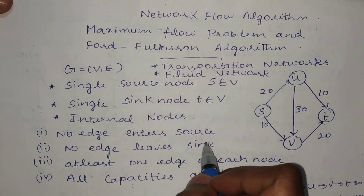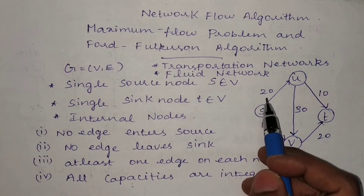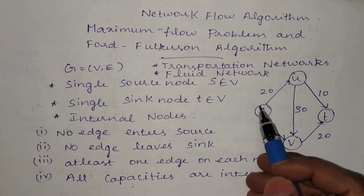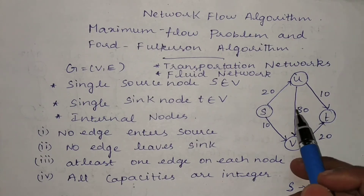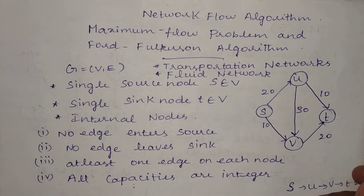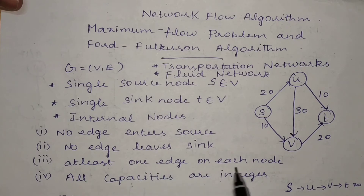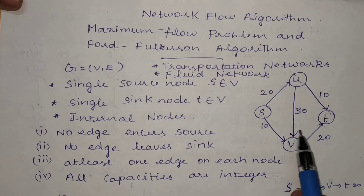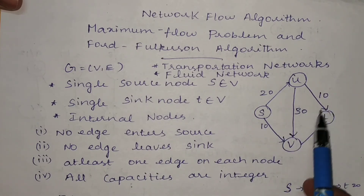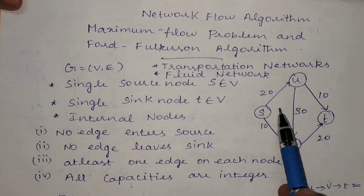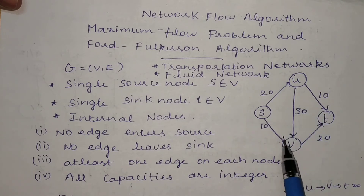No edge enters the source node and no edge leaves the sink node. This means the source node has no incoming edges — traversal starts from it — and the target node has no outgoing edges. Next, each node in the graph must have at least one edge, though it can have more. All capacity values are positive real integers. Whatever values are assigned to edges represent the capacity of the link between any two systems.